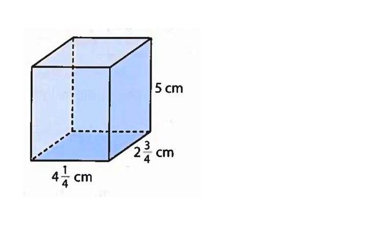We know it is a rectangular prism because it does not have all the same dimensions, right? If it had the same dimensions it would be a cube, but we don't have that here. So, the formula for volume, for a rectangular prism, is volume is equal to length times width times height.